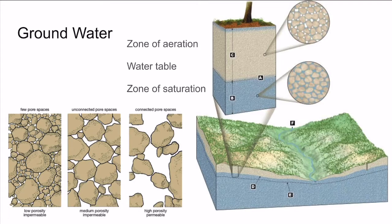Impermeable surfaces like asphalt can exacerbate flooding. Porosity refers to how much material can store water — it is a percentage of how much open space is in a volume of material. If particles are the same size, there are many gaps where water can stay. But if particles are a variety of sizes, the small ones plug the holes in between, leaving less space for water. Materials with bigger particles are generally more permeable and porous.